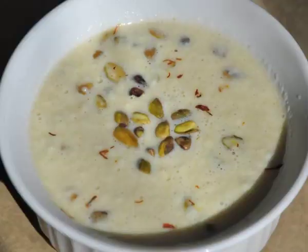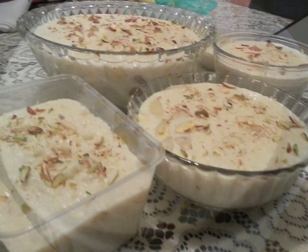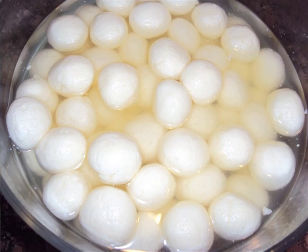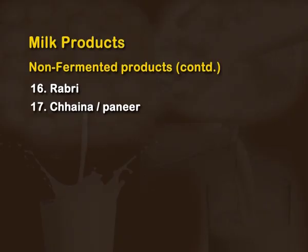Rabdi is a concentrated sweetened product comprising several layers of milk or clotted cream to which sugar is added when it reaches one third of its concentration. Chena in the north, or paneer, is a major heat and acid coagulated product where lime juice or vinegar is added to milk to coagulate casein and separate it. It is used in Indian sweets like rasmalai and rasgulla.